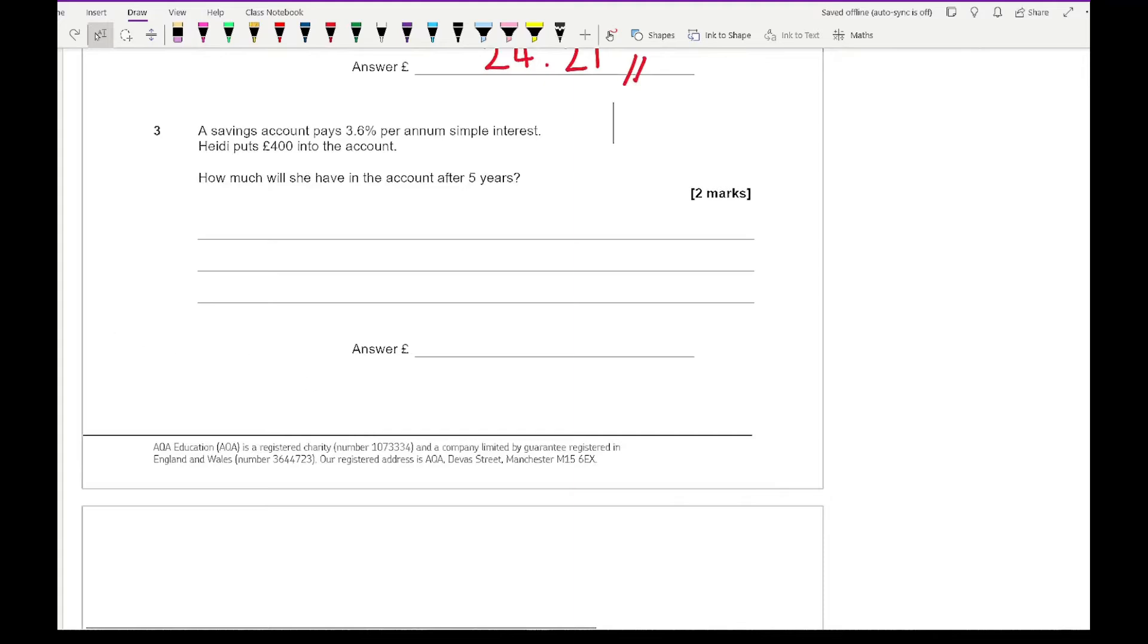Moving on to question three, it says that a savings account pays 3.6% per annum simple interest. Heidi puts £400 in her account. How much will she have after five years? For this, this is not a compound interest question. This is a simple interest question and annum just means per year.